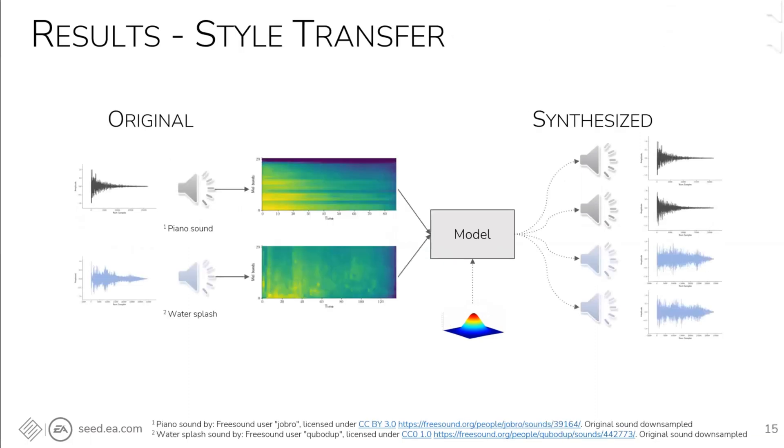Since the model has only been exposed to explosion sounds, we get this kind of style transfer generation when we use a conditioner that is something other than an explosion sound. So for example, here we have a piano sound that sounds like a gunshot and also a water splash that could sound like a fire explosion.